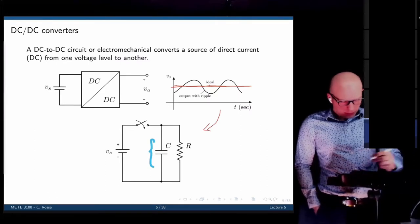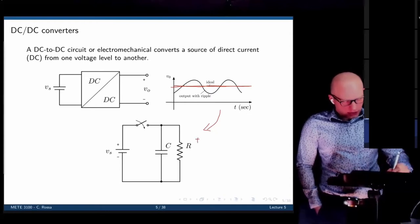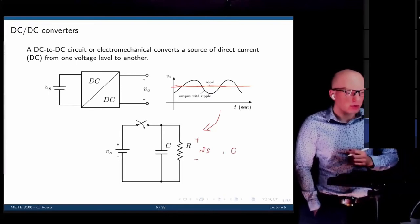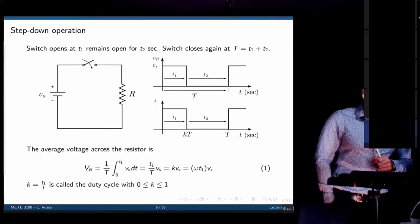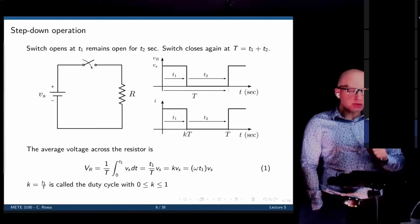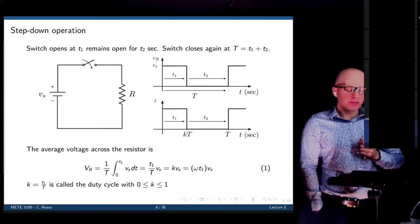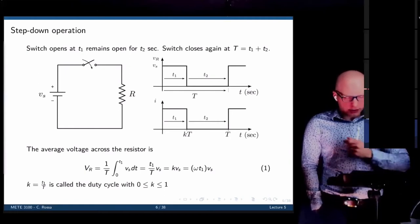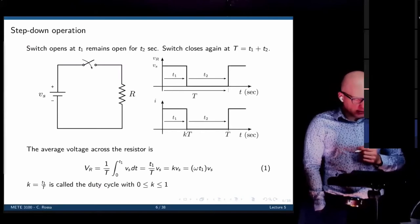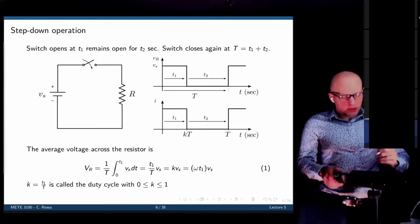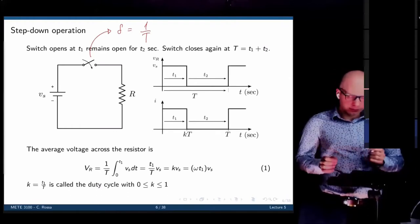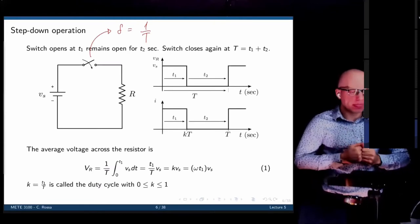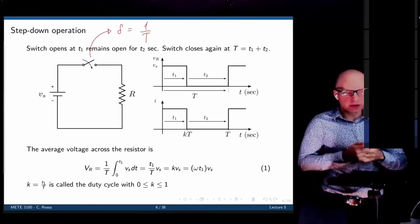If we close the switch, the voltage across the load is Vs. If we open the switch, the voltage across the load is zero. We implement this with a MOSFET or transistor. We are going to open and close this switch at a frequency F, which gives a period T = 1/F. That is typically in the order of kilohertz — something happening very fast. Within one period, we maintain the switch open and closed for a specific amount of time.